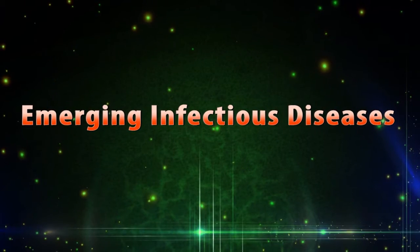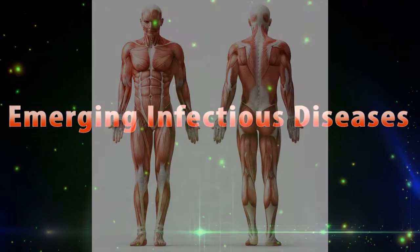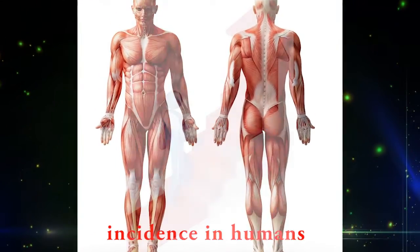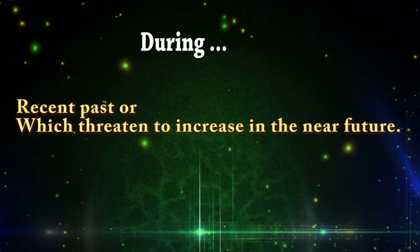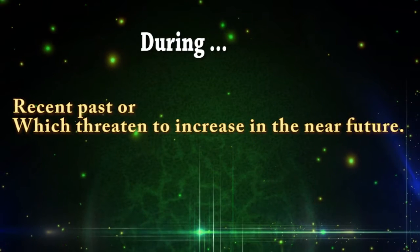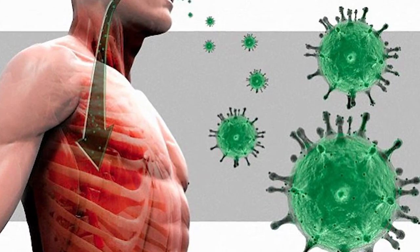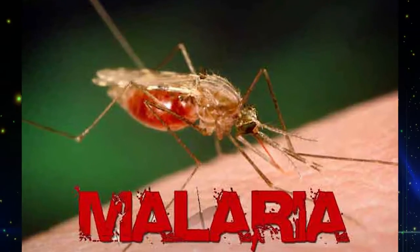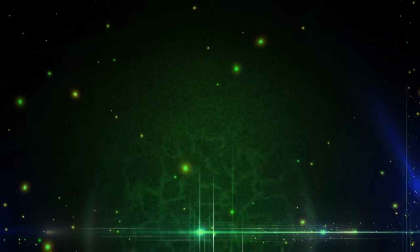Emerging infectious diseases are those whose incidence in humans has increased during the recent past or which threaten to increase in the near future. Examples include HIV/AIDS, severe acute respiratory syndrome, influenza, dengue, malaria, cholera, and Ebola.